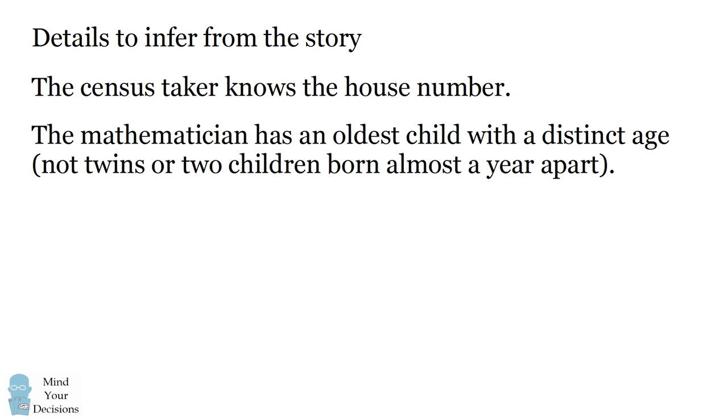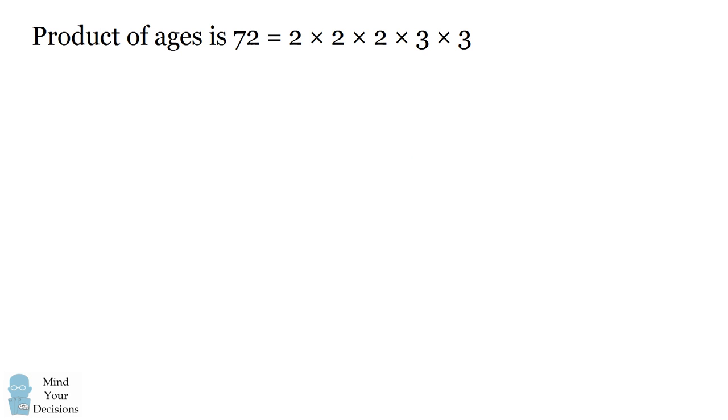This implies the mathematician does not have two oldest children who are twins, because you wouldn't generally refer to twins as being the oldest child, even though one is probably older by a few minutes. You could also have children born nine to twelve months apart who could possibly be the same age, even though they're not twins. But commonly, this doesn't happen. So in this story, we're going to say the mathematician has an oldest child with a distinct age, and that's going to give the census taker the detail he needs.